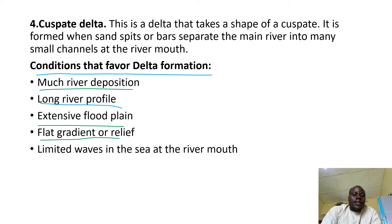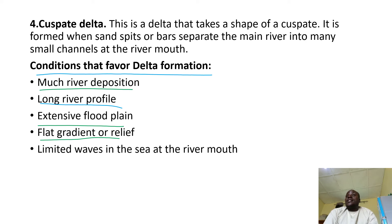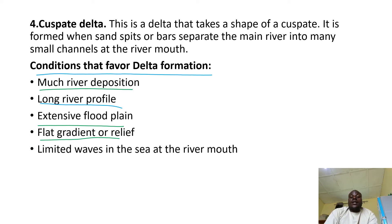Limited waves in the sea at the river mouth is another condition. The waves at the river mouth where deltas form must be weak, because if they are strong, they will destroy the delta before it matures.